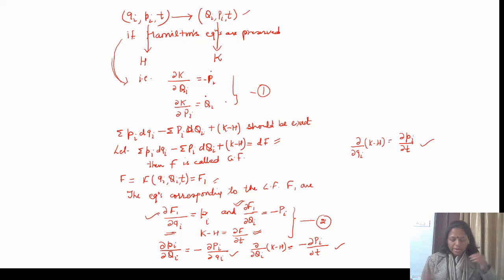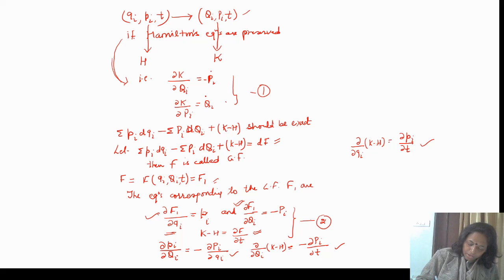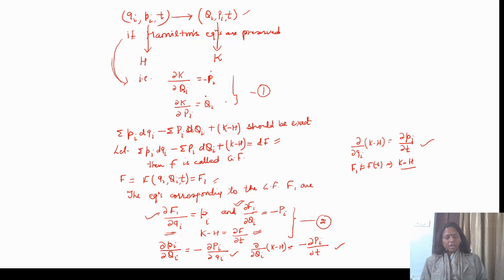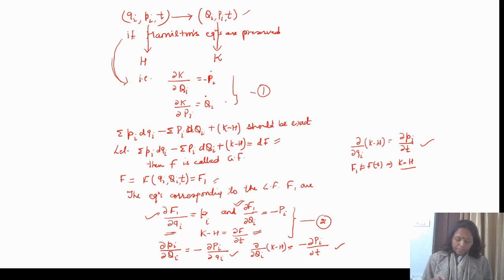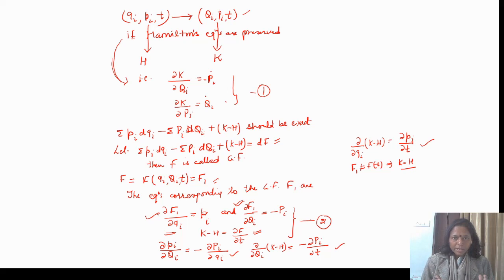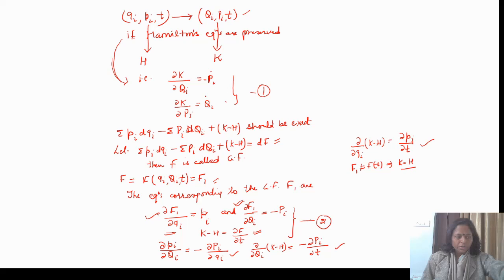These are the Maxwell conditions. And actually, if F1 is not a function of time — if F1 is time independent — then K equals H. So, these were the conditions derived in our previous lecture. Now, there may be more forms of this generating function. But before that, I will explain one example of how to derive the transformation equations when a generating function is given.